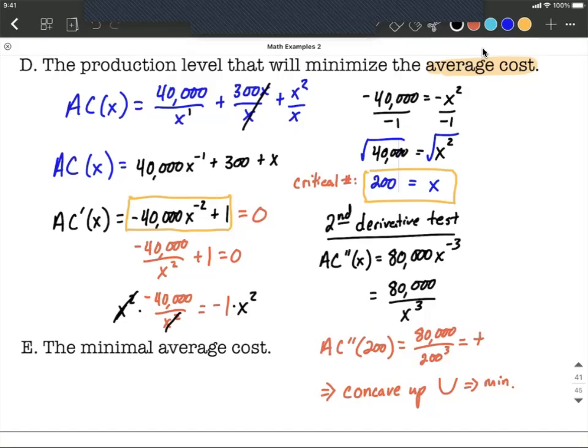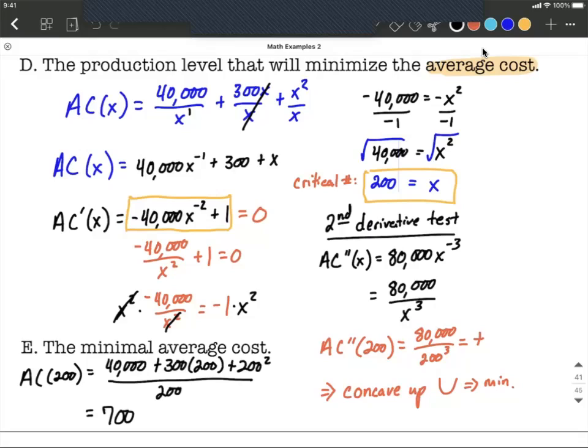So to finish this up, I'm using the original version of our average cost formula where we had 40,000 plus 300 times 200 plus 200² and that all gets divided by 200 for an overall result of 700. So our minimal average cost would be $700, that's the very best we can do based on the cost function that we were originally given.